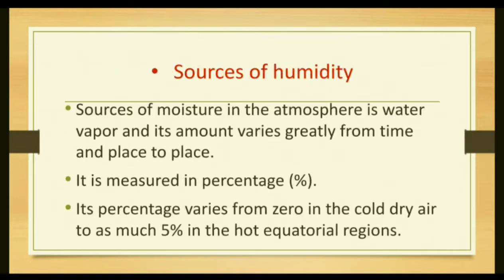Sources of humidity: the most important source of humidity — moisture or water vapor — in the atmosphere is water vapor, and its amount varies greatly from time to time and place to place. Time to time means from morning to evening to night. Place to place: simply considering the heat zones like the torrid zone, temperate zone, and frigid zone — all these places have a different amount of humidity because they receive different amounts of heat and have different areas of water bodies.